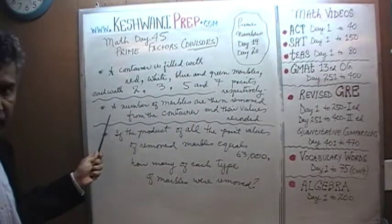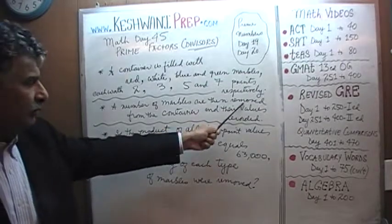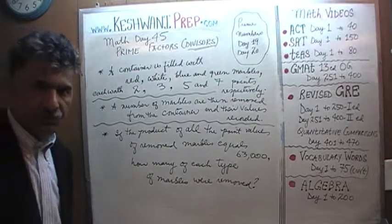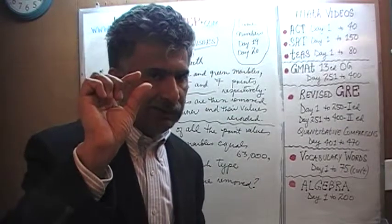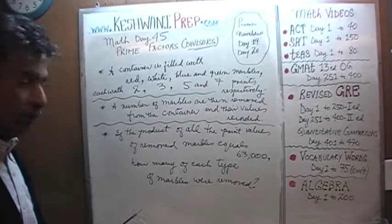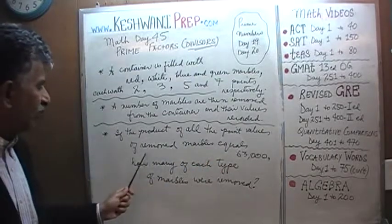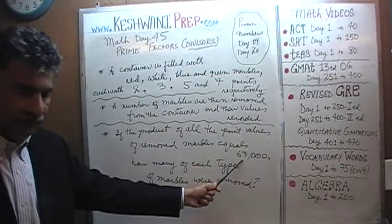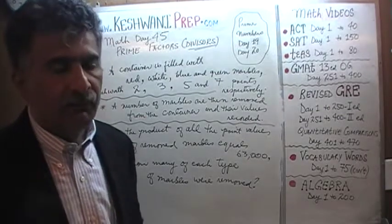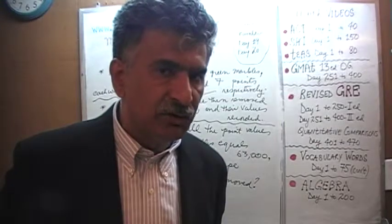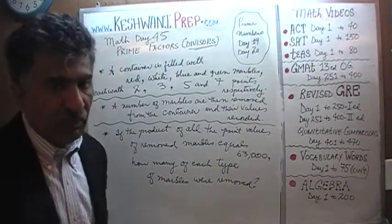Second sentence — there are three sentences in the problem. A number of marbles are then removed from the container and their values recorded. So each time we put our hand in there, we remove a bunch of marbles and we just record the number value of each of the marbles that we have removed. We are told that if the product of all the points value of the removed marbles equals 63,000, the question simply is: how many of each type must we have removed?